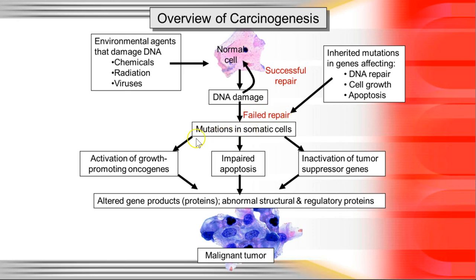When a failed repair happens, you can initiate apoptosis, or just stop the cell from doing anything. But if there's a mutation in the apoptosis signaling proteins, the cell will not die. If you stop the genes that stop growth — called tumor suppressor genes — and break those, then you will get tumors. Sometimes you have proteins that promote growth; if you activate those permanently, you will constantly have cell growth. Ultimately, what you end up getting is these abnormal cells — your malignant tumors.